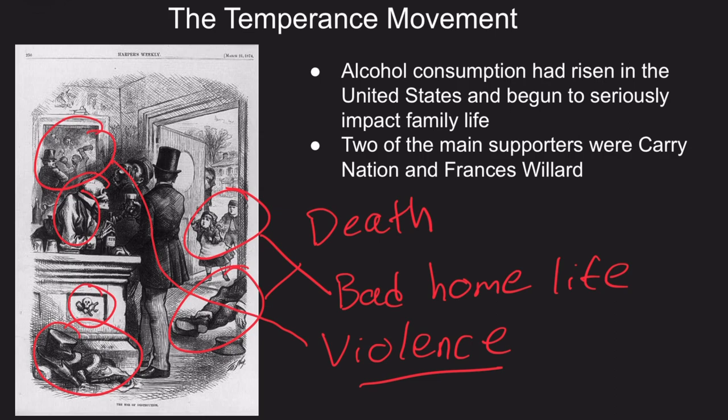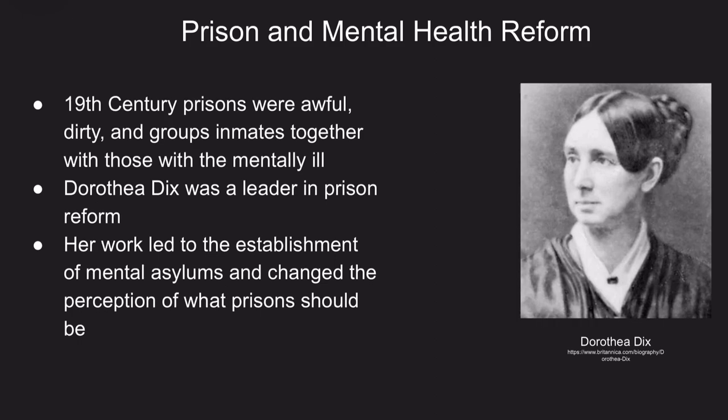Despite this, the temperance movement became the basis for the 18th Amendment and the creation of Prohibition, which made the sale and consumption of alcohol illegal for a decade and a half — until it was overturned by the ironically numbered 21st Amendment. During the 19th century, the prison system was also in dire need of reform.